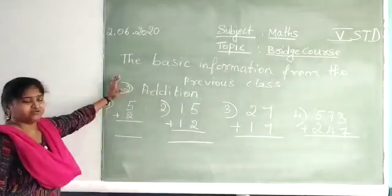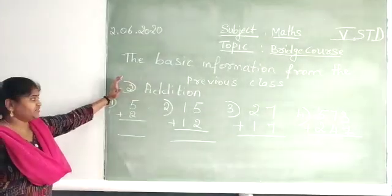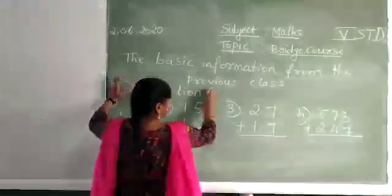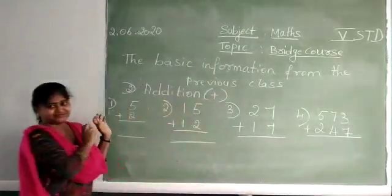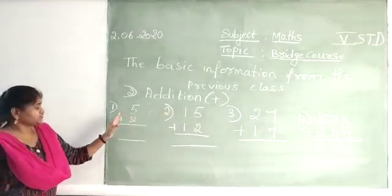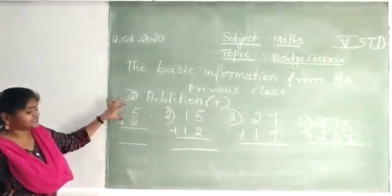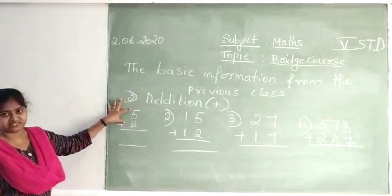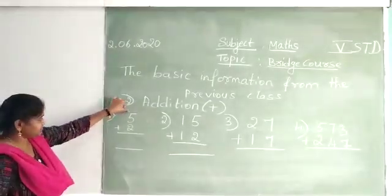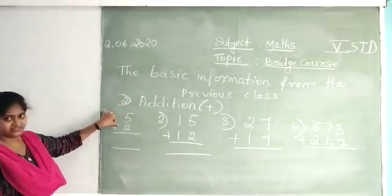Okay children, now the second topic is addition. Everybody knows what addition is. The symbol of addition is plus. So here, the first sum I am going to do uses single digit numbers. There is no carrying here — you can see easily. 5 plus 2.